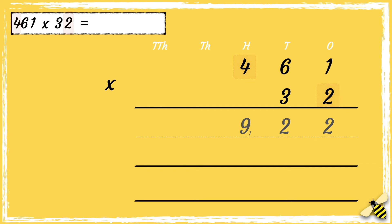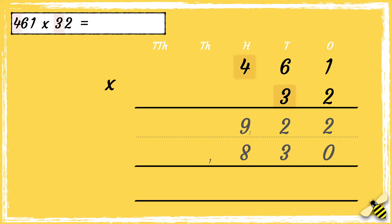Now we need to multiply 3 tens by 1. As we're multiplying the number by 3 tens, we need to use zero as a placeholder in the ones column. With zero as our placeholder, we can multiply 3 tens by 1 — 3 times 1 is 3. Then 3 tens multiplied by 6 tens — 3 times 6 is 18. We can drop the 1 down in the thousands column. Then 3 tens multiplied by 4 hundreds — 3 times 4 is 12, add 1 more is 13.